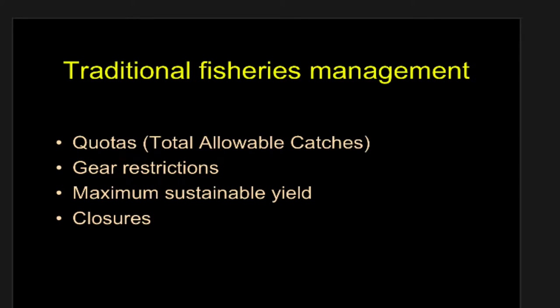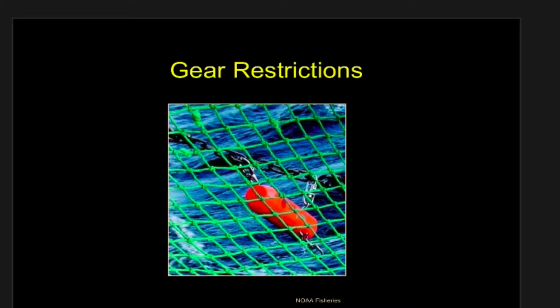Let's talk about a couple of these traditional approaches to fisheries management. Gear restrictions is pretty obvious. This is choosing a net size of different diameter, choosing objects that interact with the bottom differently, choosing hooks that have different shapes that won't hook certain critters, or if they do hook some, they're able to get off more easily than a traditional barbed hook. So gear restrictions are pretty obvious.